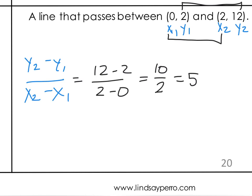I want to show you one more time that it does not matter. If I did y1 minus y2, or if I labeled them the opposite way, I would get 2 minus 12, and then 0 minus 2. 2 minus 12 is negative 10 over negative 2, which still simplifies, since a negative divided by negative is positive, it still simplifies to 5.